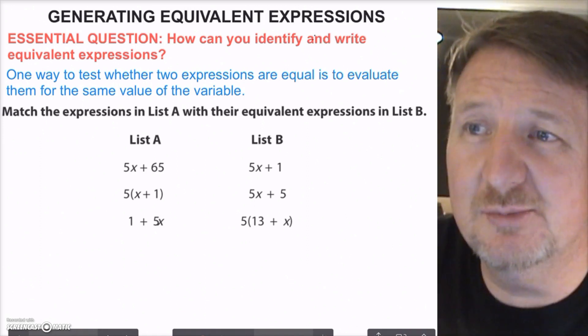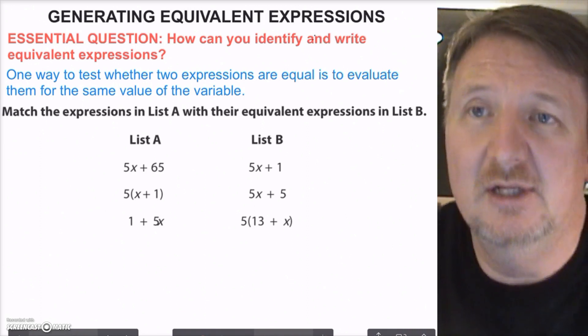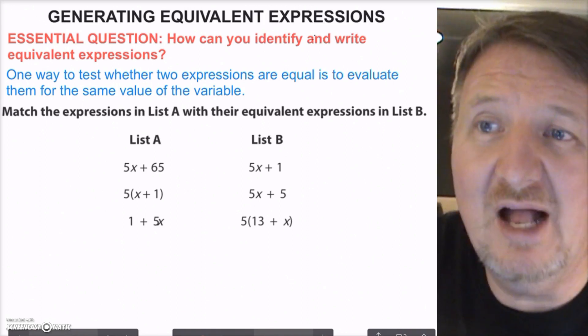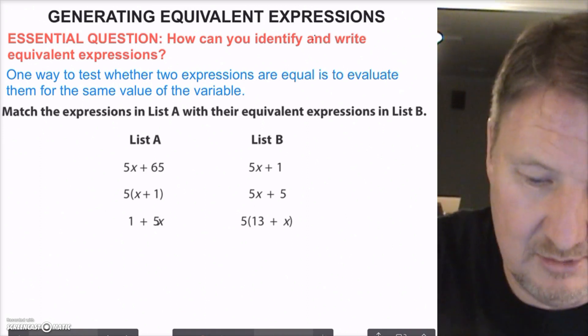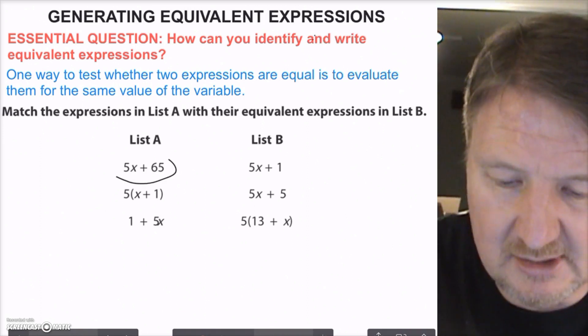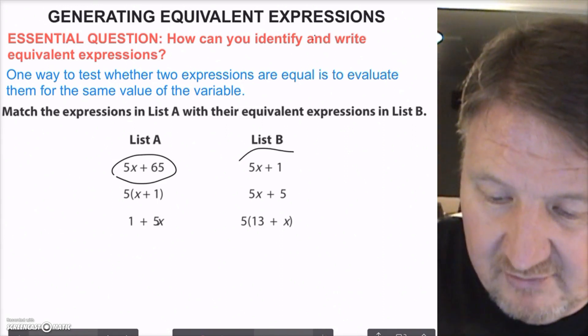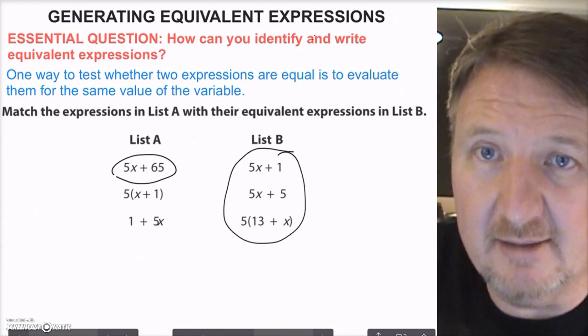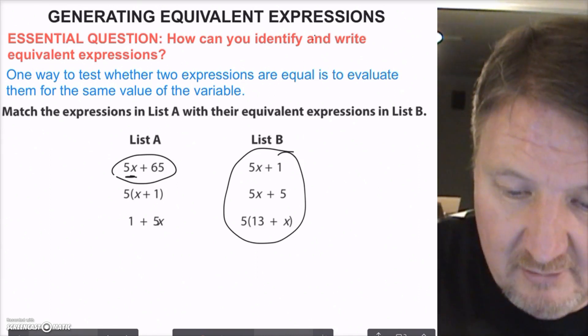One way you can test whether two expressions are equal is to evaluate them. Evaluate means to solve, get an answer. Solve them for the same value of the variable. I'm going to get a pencil here so we can start talking about it. Let's look at this list here. I got 5x plus 65. I want to find out if one of these three expressions is equal to that. So I pick a number, just a random number, and I substitute it for the x.